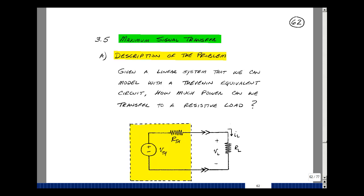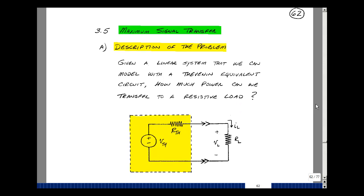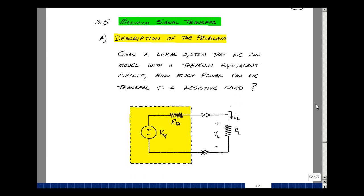Let me describe the problem. Given a linear system that we can model with a Thevenin equivalent circuit, how much power can we transfer to a resistive load? Let's look at two cases: one where I have the maximum current in the load, and one where I have the maximum voltage across the load.